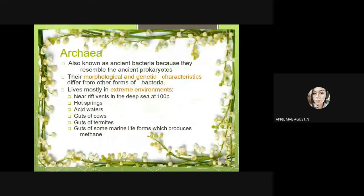Archaea, also known as ancient bacteria, resemble the ancient prokaryotes. Their morphological and genetic characteristics differ from other forms of bacteria. They live mostly in extreme environments such as the deep sea at 100°C, hot springs, acid waters, and in the guts of cows, termites, and other organisms, where they produce methane. 'Guts' here refers to the lower alimentary canal, or the intestine.